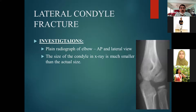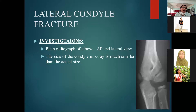Regarding investigations, an interesting point about X-rays in children is that most of the constituent parts of the elbow in a child are cartilage. Cartilage does not give a good X-ray image, so cartilage is not very evident on plain films. Only the bony part gives impressions on X-ray.